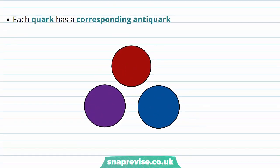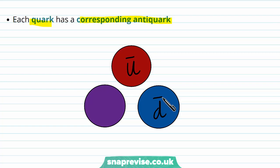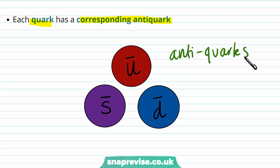All particles have a corresponding anti-particle, and this is also the case for quarks — each quark has a corresponding anti-quark. So we have the anti-up quark, the anti-down quark, and the anti-strange quark. Their symbols are the same as the symbols for the quarks but with a bar on top to show that it's the anti-quark.